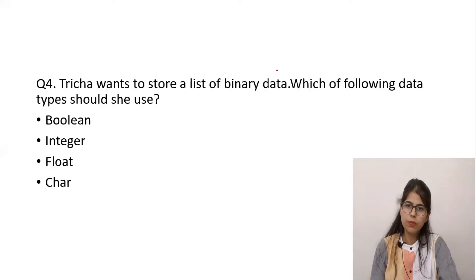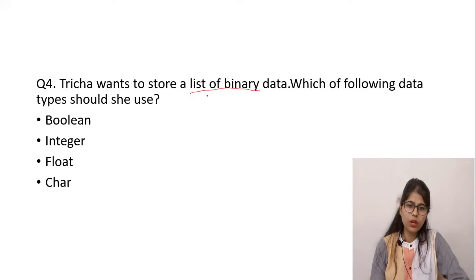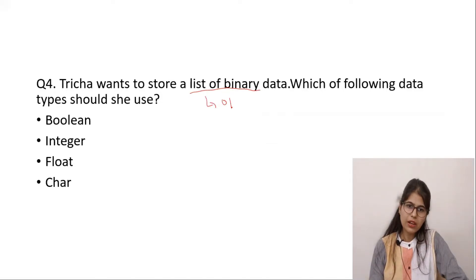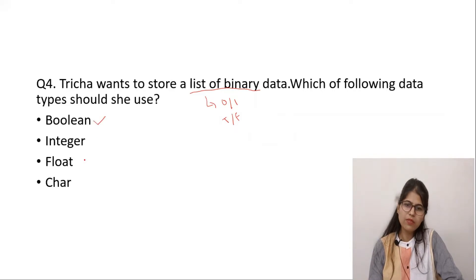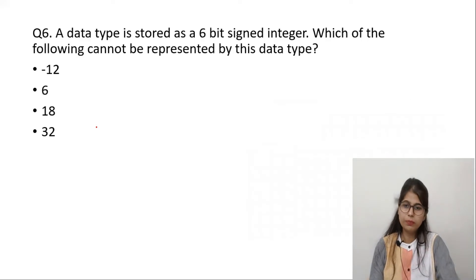The next question is: Tracha wants to store a list of binary data — which of the following types should she use? We have to extract the important information: it is a list of binary data. Binary means 0 or 1, either true or false. We know that boolean is the data type which can store only two values, true and false. So the correct answer for this question will be boolean.